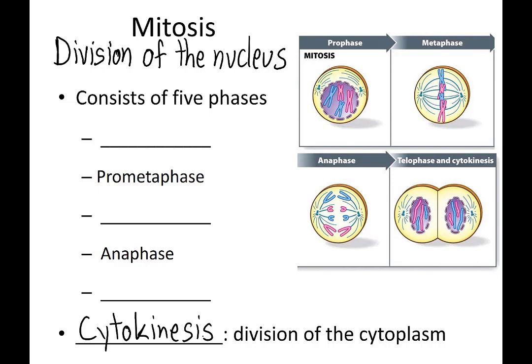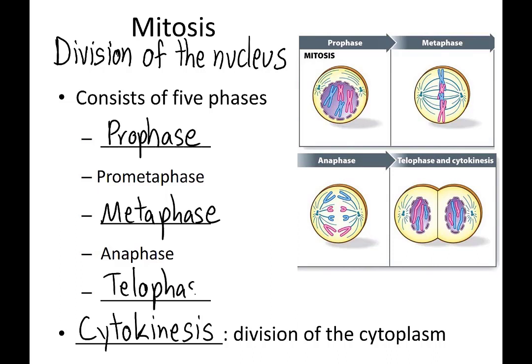When we talk about mitosis, it is often broken up into five phases. These five phases are prophase, prometaphase, metaphase, anaphase, and telophase. It is important to understand that cytokinesis is not one of the stages of mitosis. Cytokinesis is often occurring at the same time as telophase, but it's mitosis and cytokinesis together that make up cell division. Let's look at each of these five stages in greater detail.